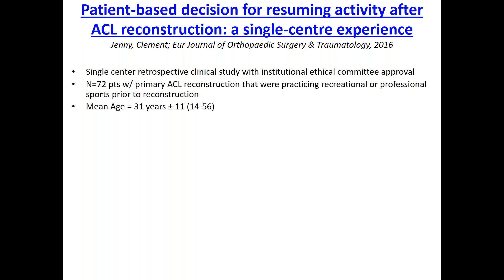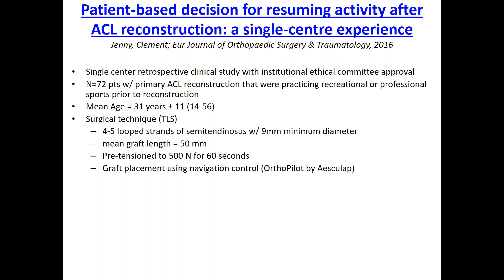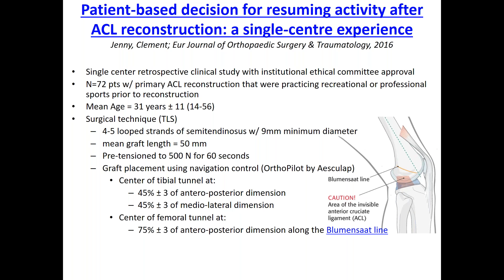The mean age was 18 to 31 years old, ranging from as young as 14 to as old as 56 years old. The surgical technique is a CLS system, which consists of 4 to 5 bone spans of a semitendinosus with a minimum diameter of 9 millimeters. The mean graft length is 50 millimeters, free tension to 500 millimeters per second. The graft length is controlled using navigational control provided by Tesco using their OrthoP ilot. Using that surgical navigation, the center of the femoral tunnel is at 45% of the AP distance and 45% of the medial-lateral dimension.